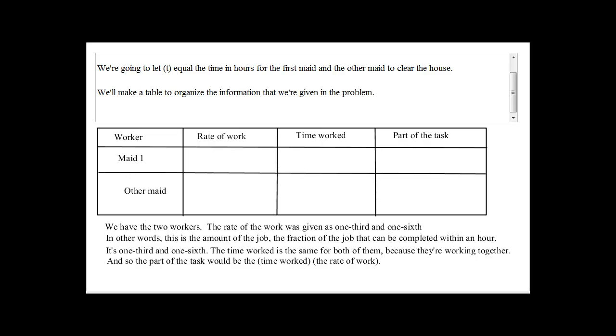The rate of the work was given as one-third and one-sixth. In other words, this is the amount of the job, the fraction of the job that can be completed within an hour. Let me ask you, Sunit. If it takes you three hours to complete a test, if I come back in one hour, what portion of that test are you done with? One over three. Exactly. So if you complete the test, the whole job, in three hours, if I come back in one hour, you will be done with one-third of the job then. Very good.